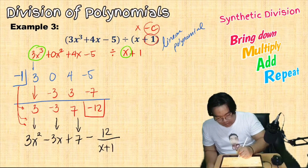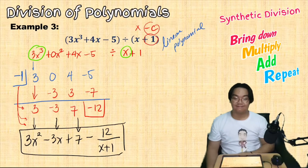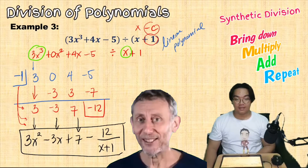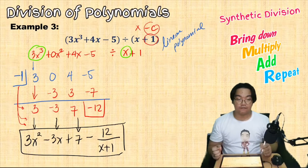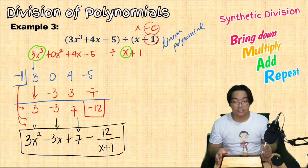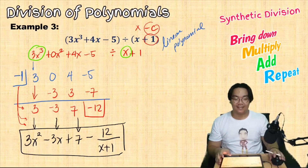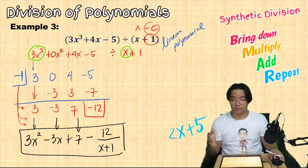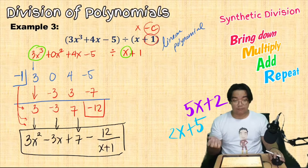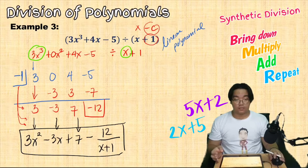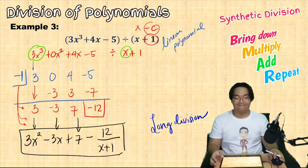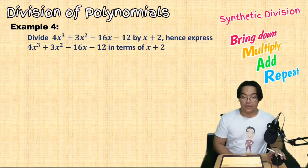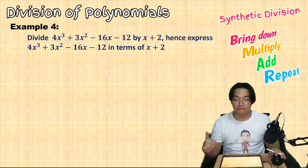Therefore our quotient is 3x squared minus 3x plus 7, with remainder negative 12 over divisor x plus 1. This is a lot faster than long division. Note: synthetic division is only straightforward when your divisor is in the form x minus C. If the divisor is something like 2x plus 5, you can technically still apply it but it becomes difficult — I suggest using long division in that case.